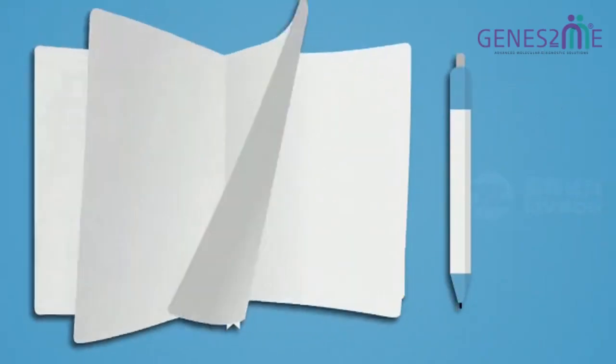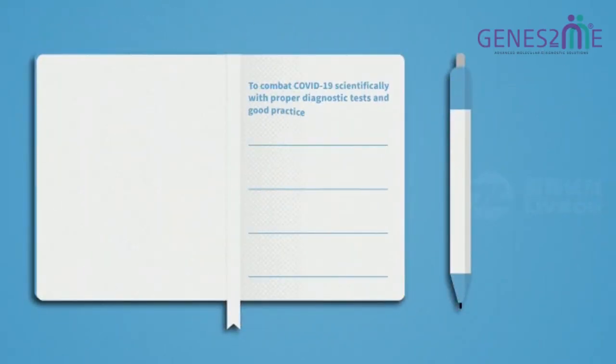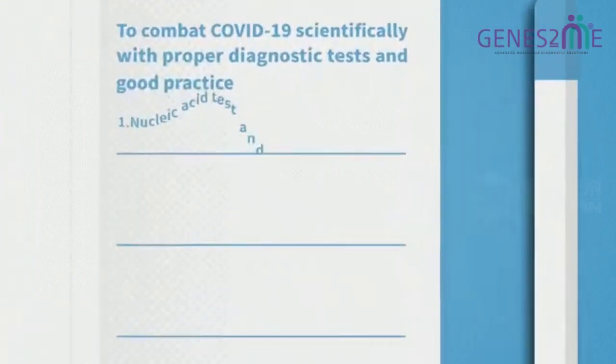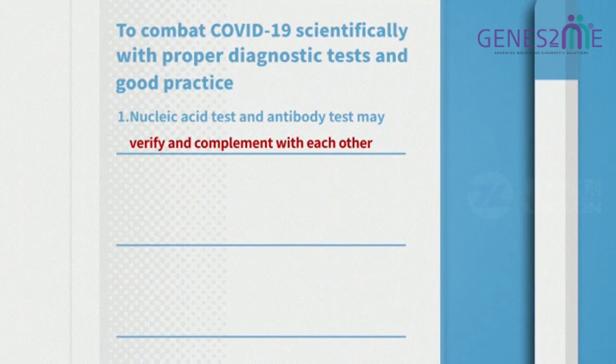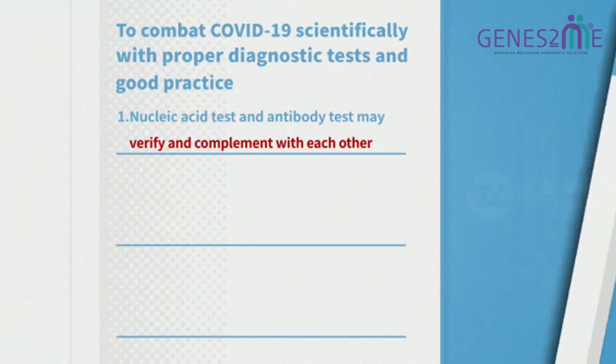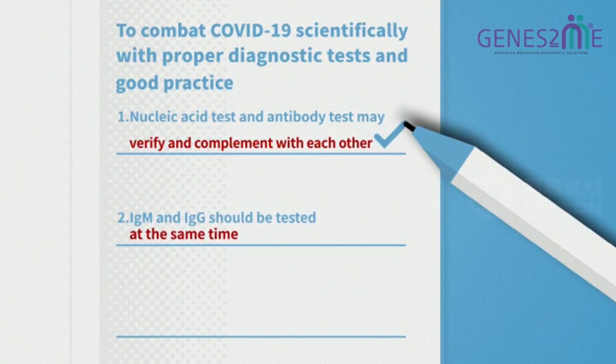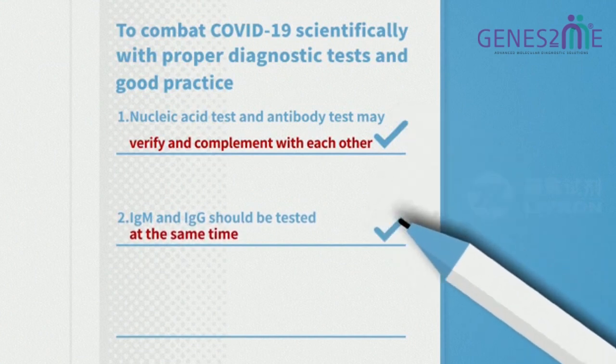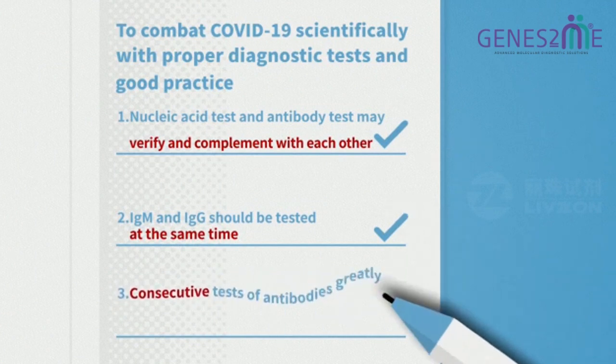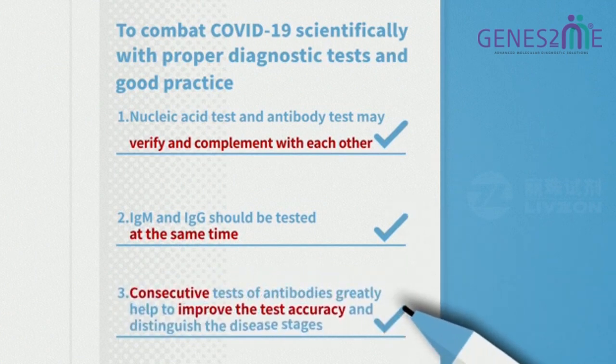As a conclusion, to combat with COVID-19, we should use diagnostic tests scientifically as following. 1. Nucleic acid test and antibody test may verify and complement with each other. 2. IgM and IgG should be tested at the same time. 3. Consecutive tests of antibodies greatly help to improve the test accuracy and distinguish the disease stages.